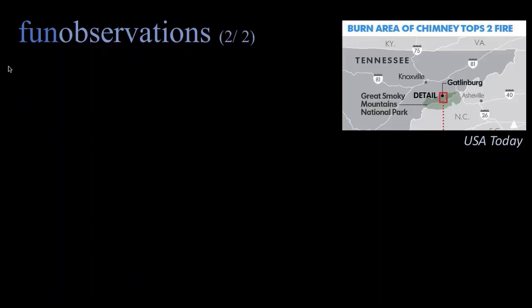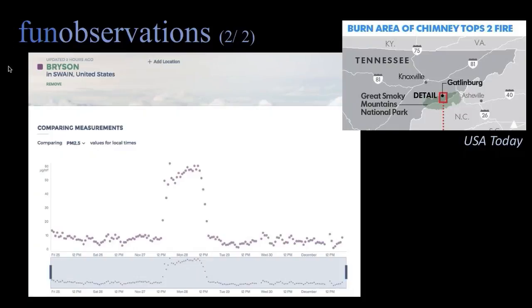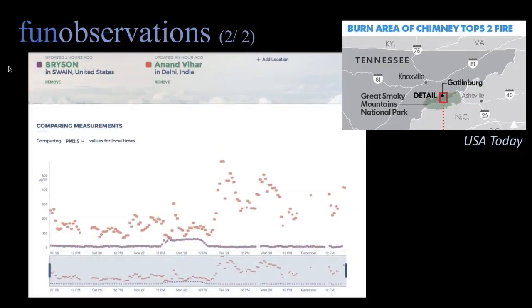Another interesting observation was the fires in Tennessee — in Gatlinburg back in November. A community member noticed they could see a bump in PM2.5 values over time, 10 miles south at an EPA station, due to that fire. Then comparing that data with a station in Delhi on our visualization, that bump turned fairly small — air quality at the Delhi station was lucky to get that low compared to the fire station south of Gatlinburg in Tennessee.